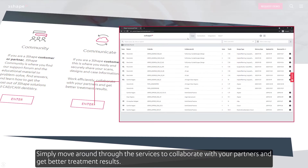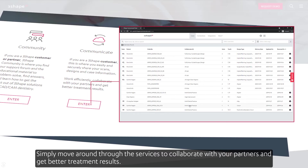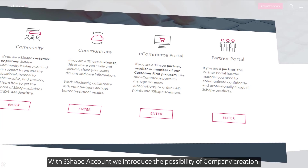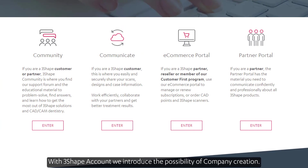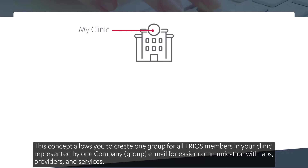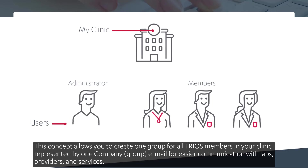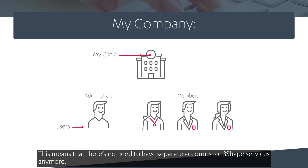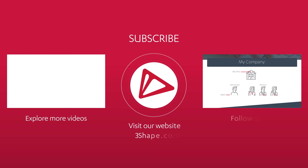Simply move around through the services to collaborate with your partners and get better treatment results. With 3Shape account, we introduce the possibility of company creation. This concept allows you to create one group for all Trios members in your clinic, represented by one company group email for easier communication with labs, providers, and services. This means that there's no need to have separate accounts for 3Shape services anymore.